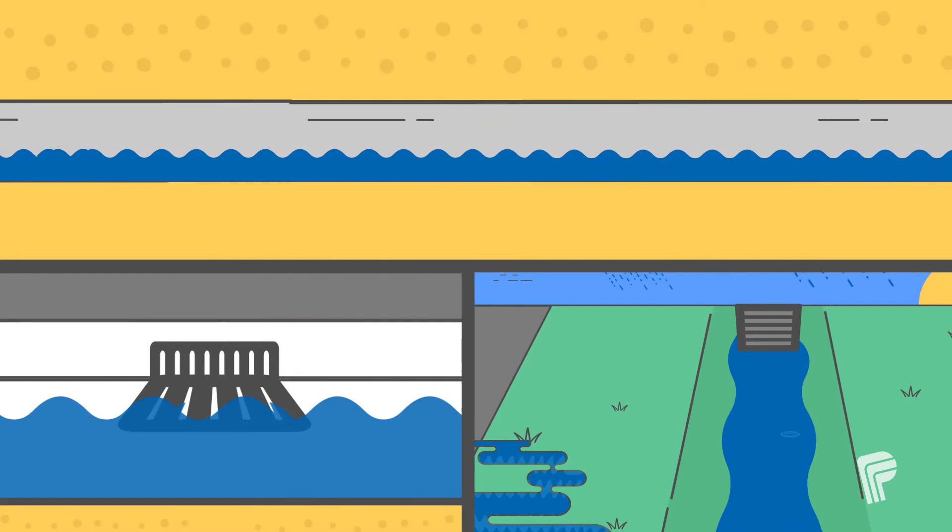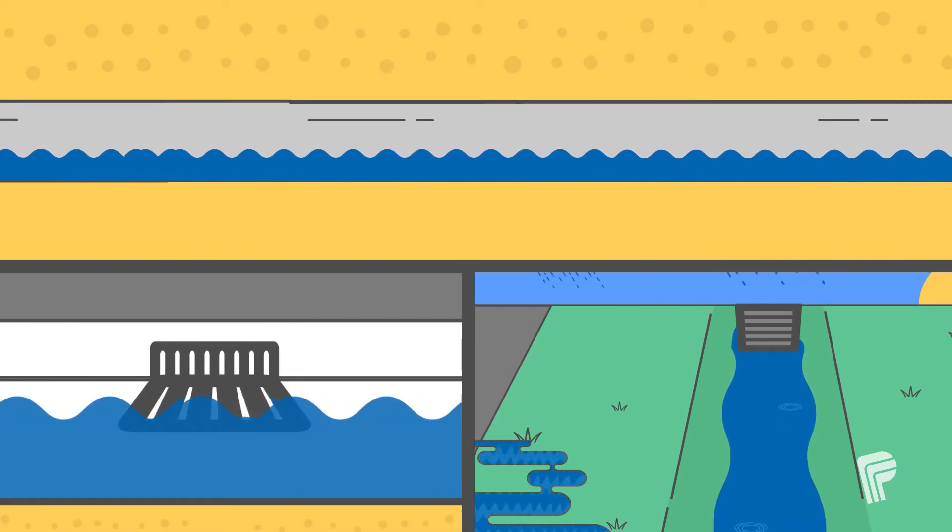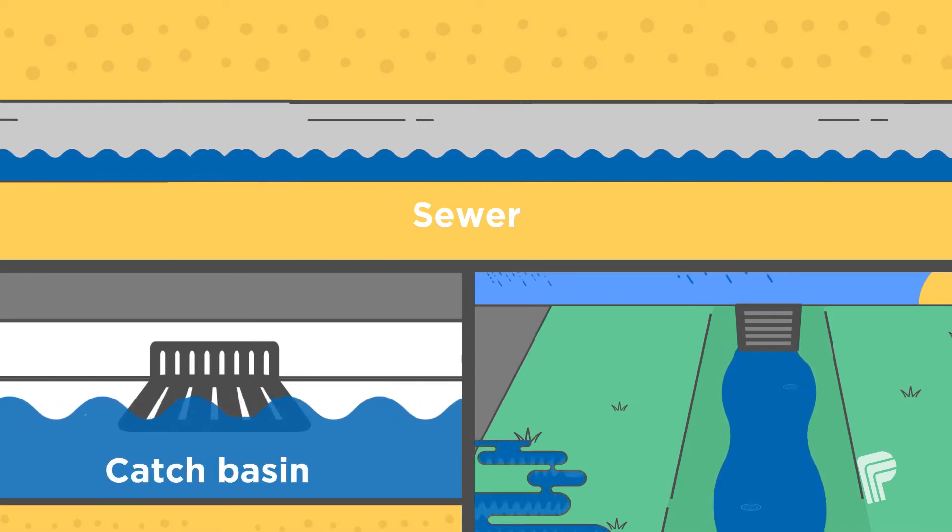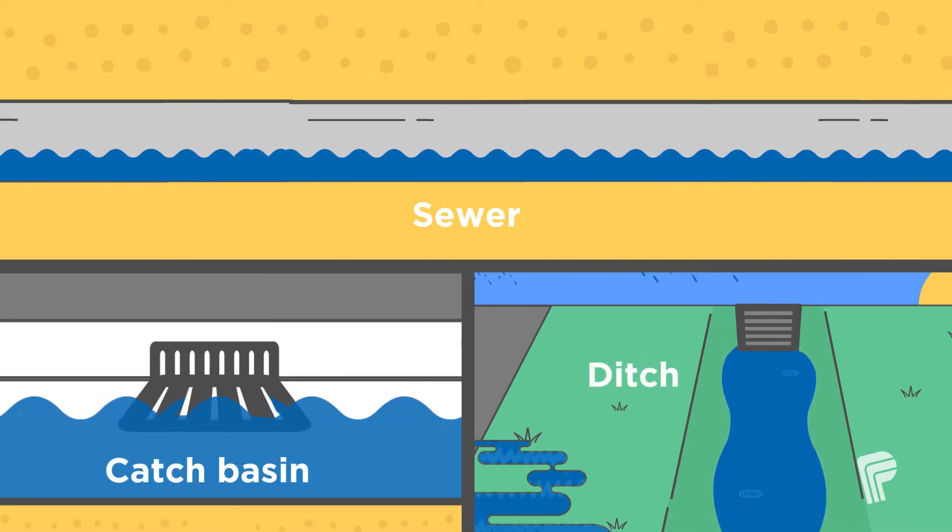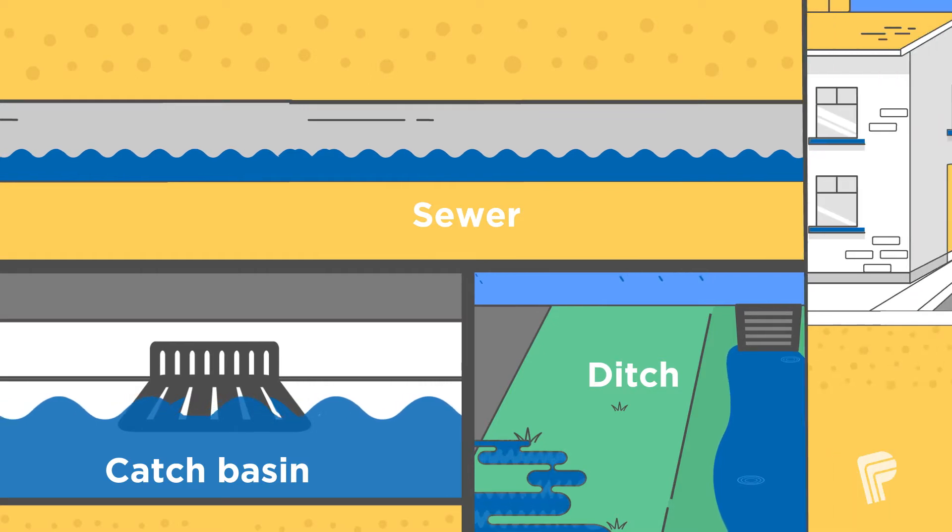The region does so by designing and building stormwater management infrastructure assets, such as sewers, catch basins, ditches, and stormwater ponds along regional roads.